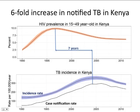The top panel of this graph shows the rapid rise of the prevalence of HIV in Kenya, which peaked in the late 1990s. The bottom panel shows the impact of HIV on TB case notifications, depicted with a solid black line, which increased and peaked about seven years after the peak in HIV. TB is now slowly declining in Kenya.